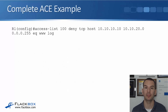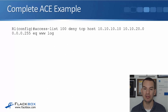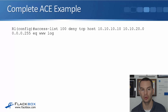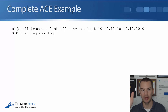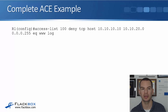Here's an example of a complete access control entry: access list 100, deny TCP from host 10.10.10.10 going to the subnet 10.10.20.0/24 with wildcard mask 0.0.0.255, equals www, and log. So on those final options, you can specify more than one — here we specified the destination port and also said log.